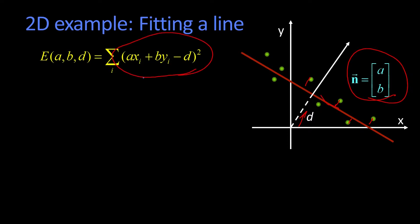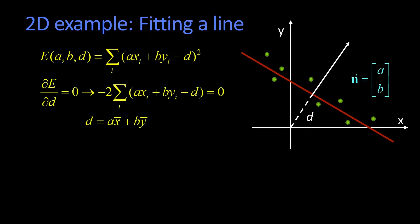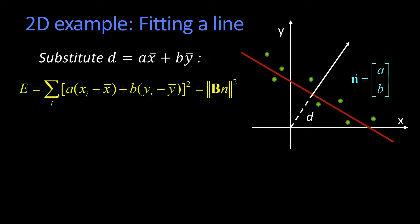All right, so that was when we were trying to do a least squares fit. So then we did this quick operation, we took the derivative with respect to the D, came up with this formula for the D in terms of the average X, the average Y. We plug that in, substitute D equal AX bar plus BY bar.